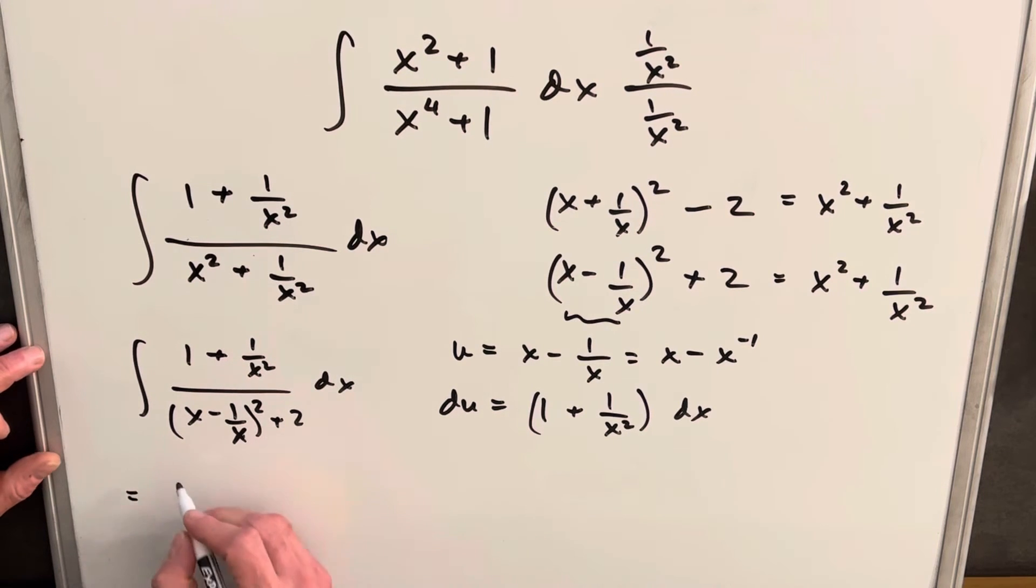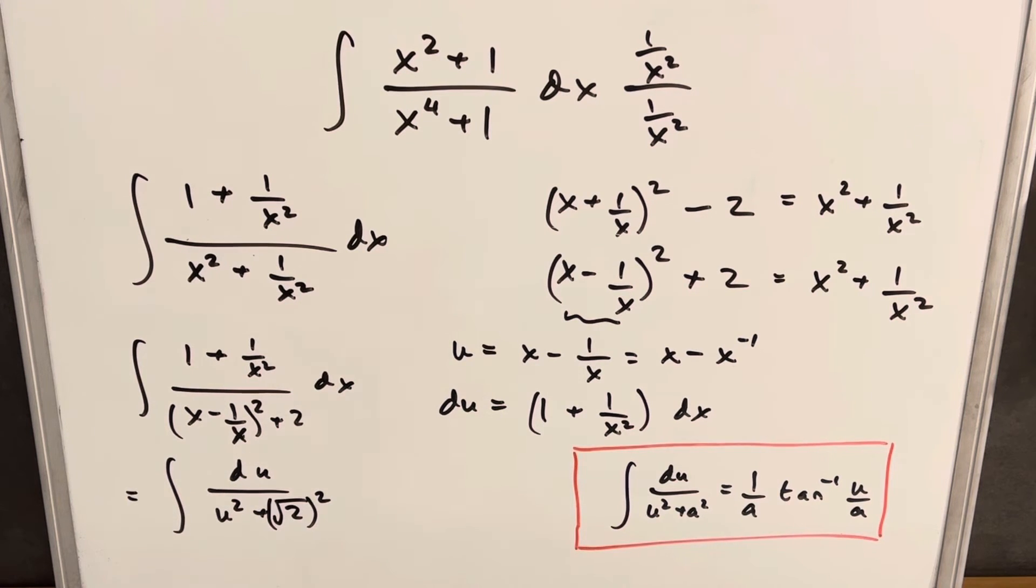So we can just make our substitution. We're going to have du over u squared plus 2. I'm going to write my 2 as square root of 2 squared. And what that's going to allow us is to use this arctan formula that we have over here on the right, where our a value is just going to be square root of 2.